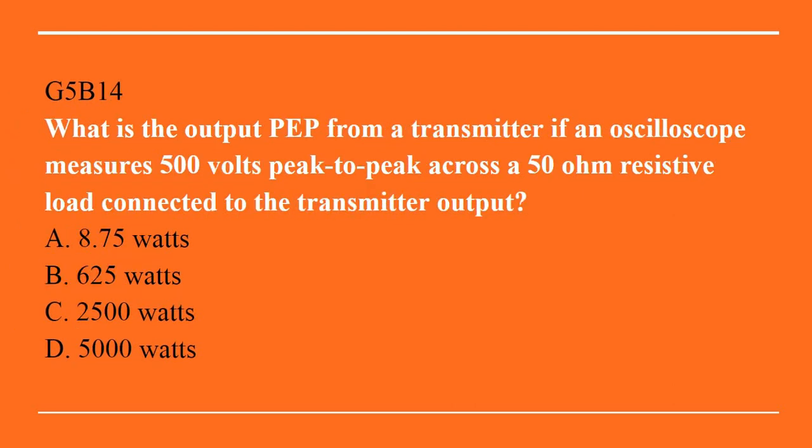G5B14: what is the output PEP from a transmitter if an oscilloscope measures 500 volts peak-to-peak across a 50 ohm resistive load connected to the transmitter output? A. 8.75 watts. B. 625 watts. C. 2,500 watts. Or D. 5,000 watts. Answer is B: 625 watts.